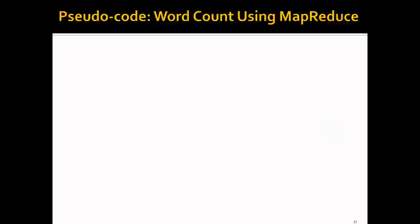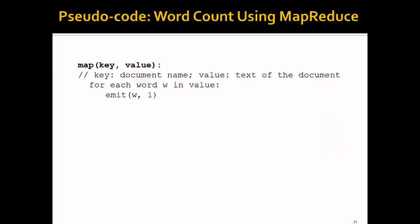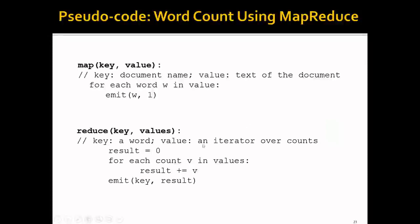Writing the pseudocode for this MapReduce word count program, we have a Map function and a Reduce function. The Map function takes a key-value pair where the key is the document name and the value is the text of the document. It has a for loop that goes through each word in the document and outputs a key-value pair for each word, where the key is the word and the value is one. For the Reduce function, the key is a word and the value is a list of values, since they are already grouped. The function uses a for loop to go through each entry in the list, adds them up, and outputs one final key-value pair.